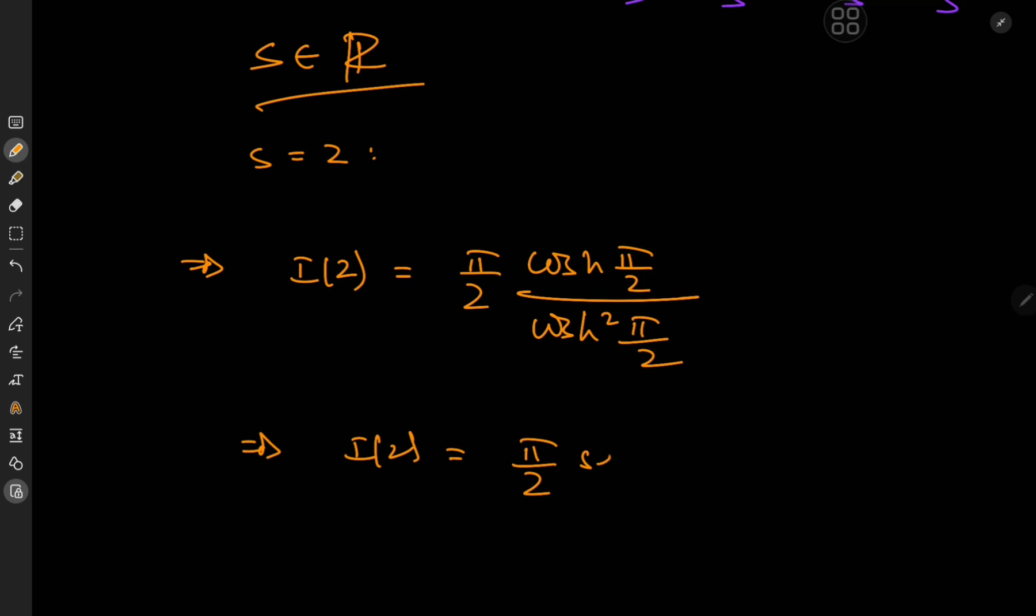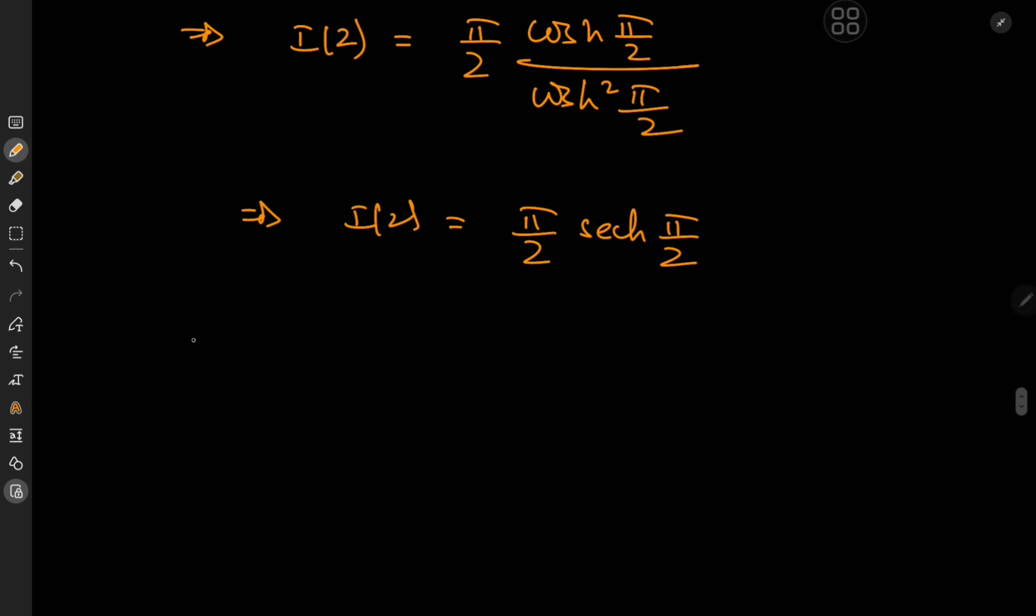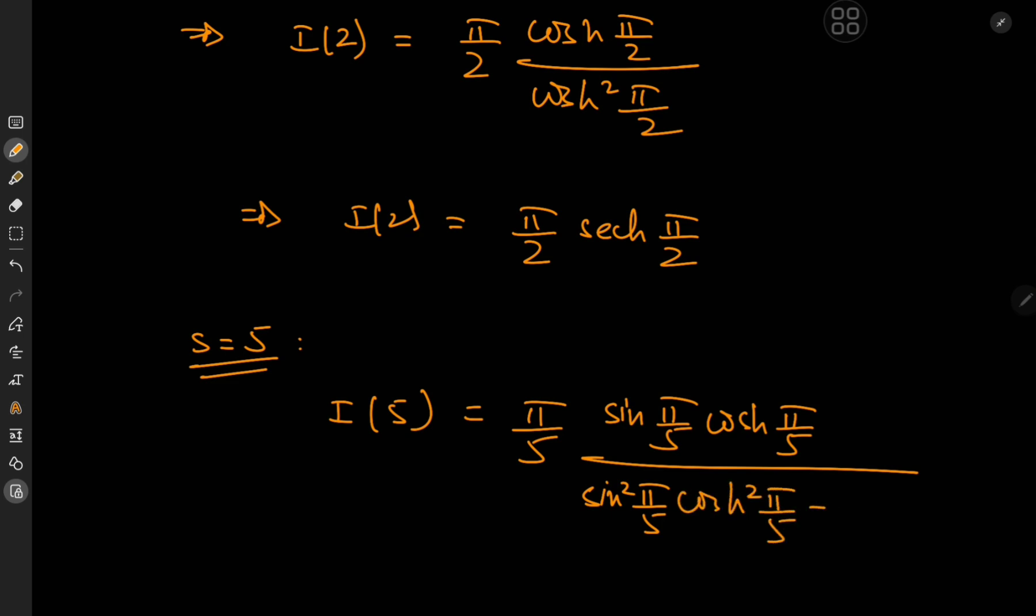i of 2 here equals pi by 2 times the hyperbolic secant pi by 2. And there's an interesting case involved for s equal to 5. And I think regular viewers of the channel know where this is going. So i of 5 would be pi by 5 times sine of pi by 5 times cosh pi by 5 divided by sine square pi by 5 cosh square pi by 5 plus cosine square pi by 5 times sinh square pi by 5.